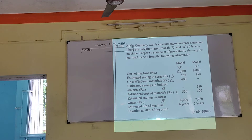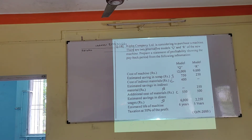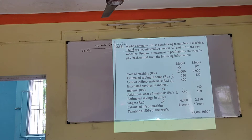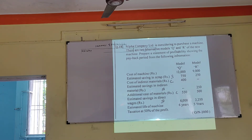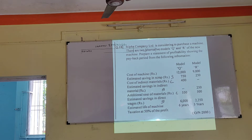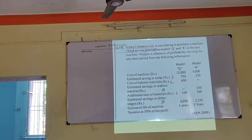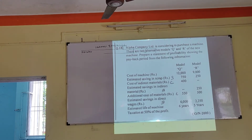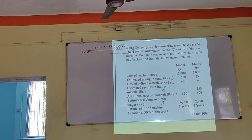Hello students. Today we are taking another problem of capital budgeting of the cost-saving concept. Yesterday we studied the same type of problem, but today it is different — the details regarding saving in wages. Yesterday, saving in wages was given by providing two details: employees not required and wages per employee. Today, the estimated saving in direct wages is given to us directly.